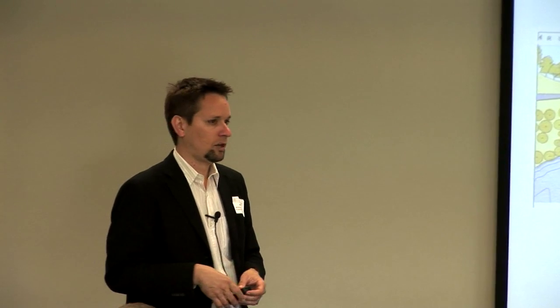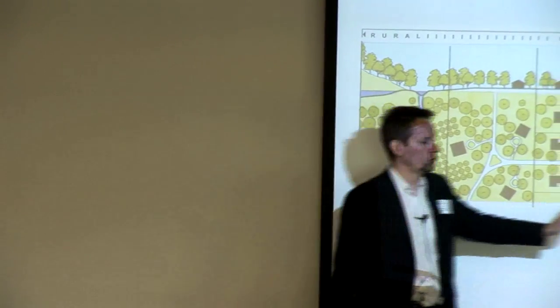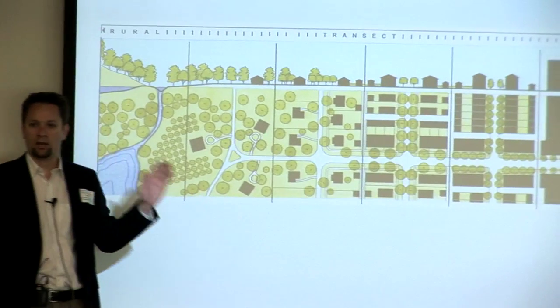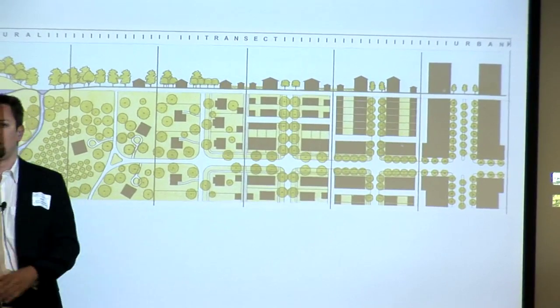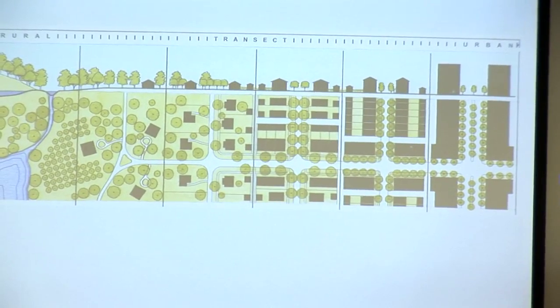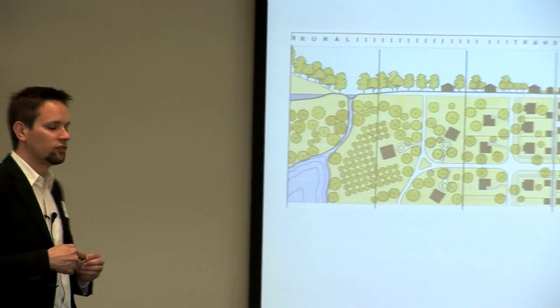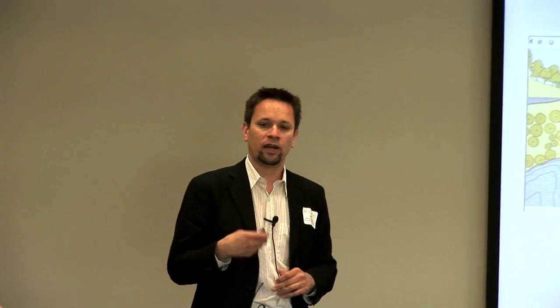The notion is that we should create human environments that essentially work the same way. There are a series of environments from the most rural to the most urban. If you cut a slice through cities in an idealistic way, this is what you would get — a series of different environments and different character of neighborhoods throughout your city, going from very rural to very urban. This seems like planning 101 and very logical.